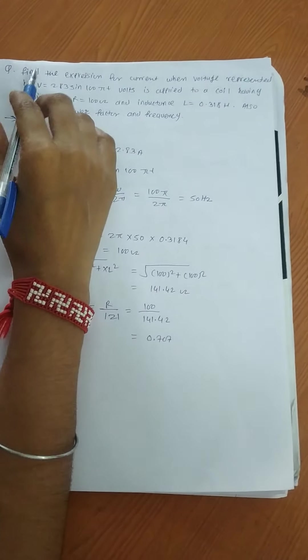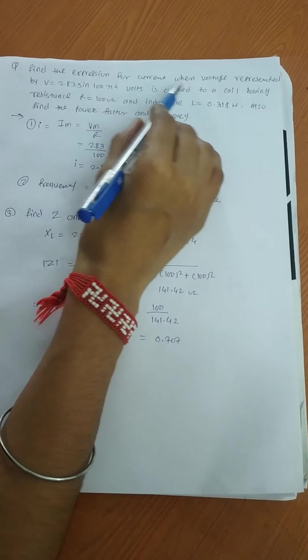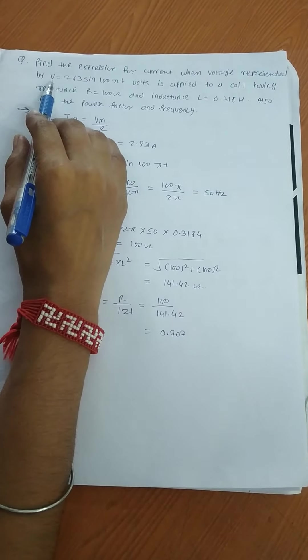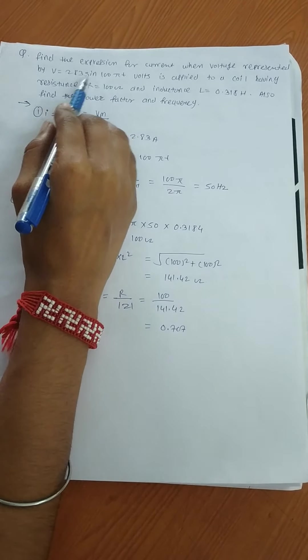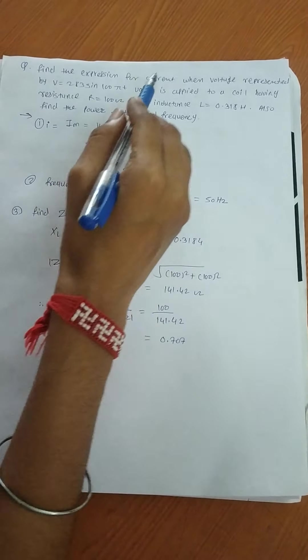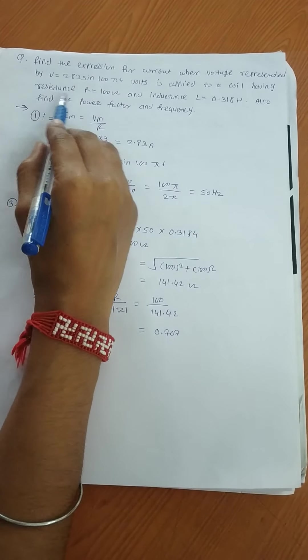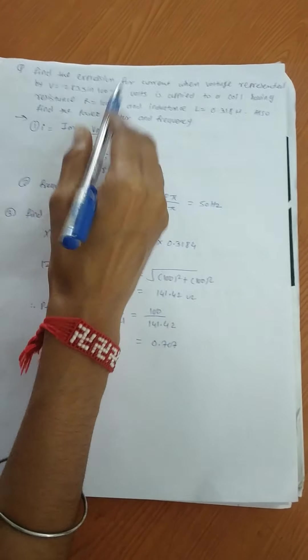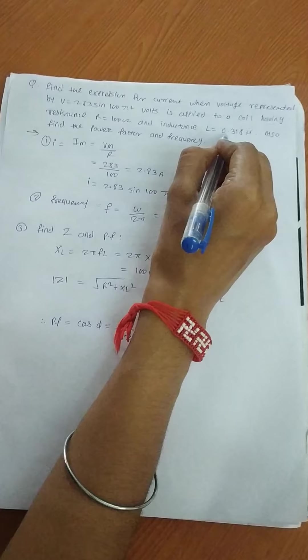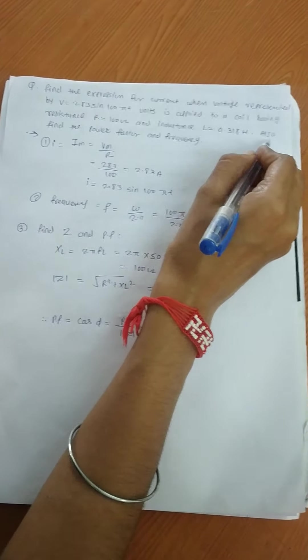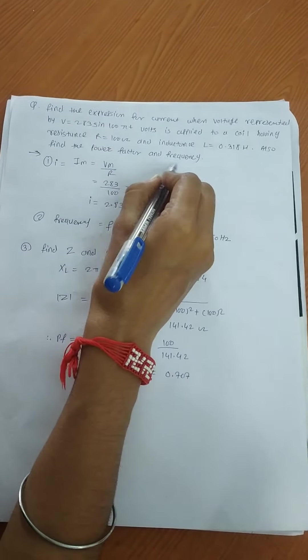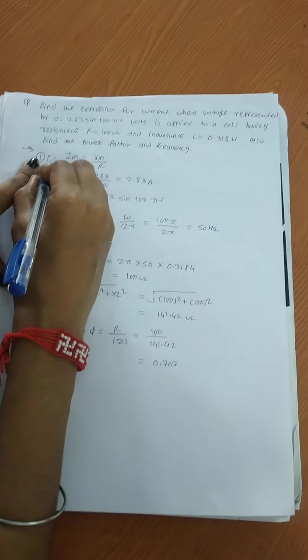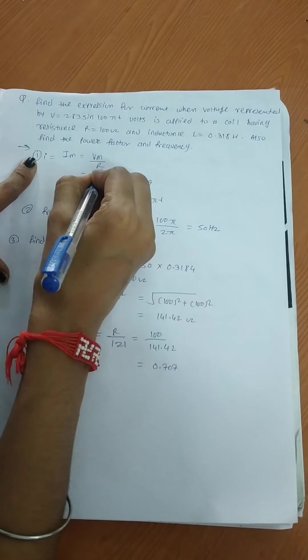For an RL circuit, find the expression for current when voltage V = 283 sin 100πT is applied to a coil having resistance R = 100 ohm and inductance L = 0.318 Henry. Also find the power factor and frequency. First, find current: IM = VM